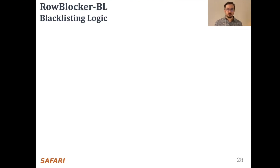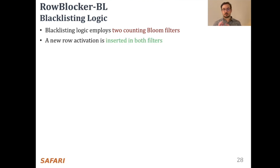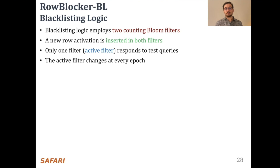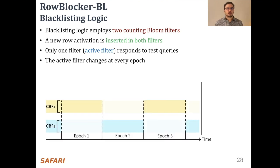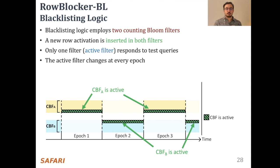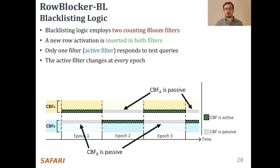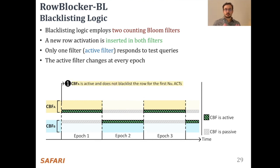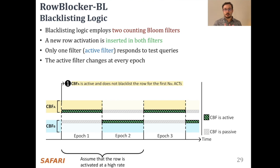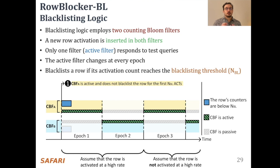I will explain this time-interleaving approach next. The blacklisting logic employs two counting bloom filters. A new row activation is inserted in both filters at all times. Only one filter responds to test queries at a given time — we call this the active filter. The active filter alternates at every epoch between the two filters. Now let's look at the operation of two filters CBFA and CBFB across a timeline. A green bar indicates that the filter is active at a given time, and we call the other filter passive, indicated with a gray bar. Assume that a row is activated at a high rate in epochs 1 and 2, and at a low rate later on.